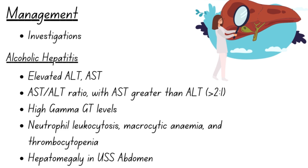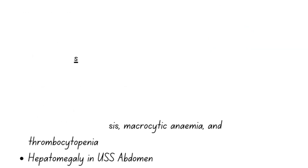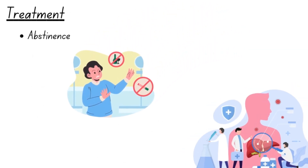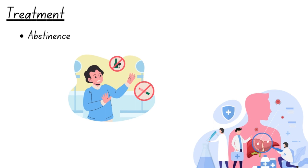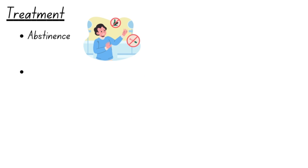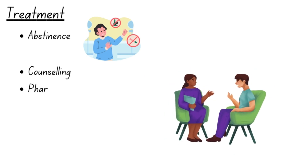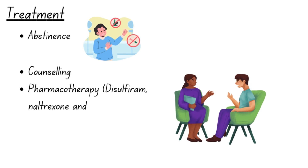A complete blood count may reveal neutrophil leukocytosis, macrocytic anemia, and thrombocytopenia. Hepatomegaly is often detected during an abdominal ultrasound scan. Treatment for alcoholic liver disease primarily focuses on abstinence from alcohol. Patients should be encouraged to discontinue alcohol use and may be referred to counseling services. Various pharmacological options are available to assist with alcohol abstinence, including disulfiram, naltrexone, and acamprosate.